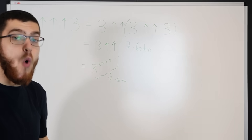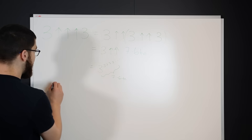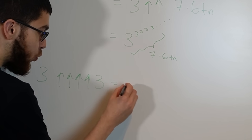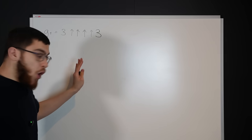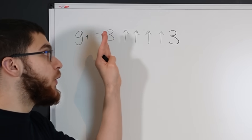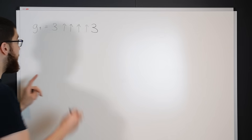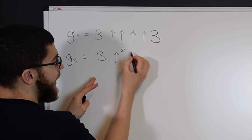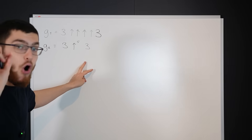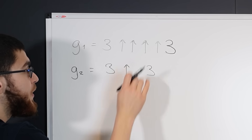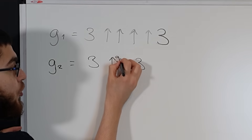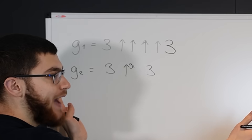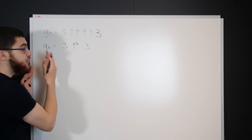This is just ridiculous. If we go one step higher we get 3↑↑↑↑3, which is G1. You might think G2 is 3 with 5 arrows and then 3, but it's actually not — it's 3 with G1 number of arrows followed by a 3, which is a ridiculously unimaginably large number of arrows.